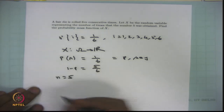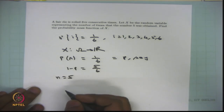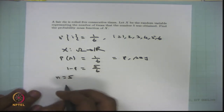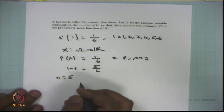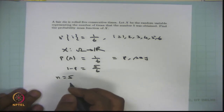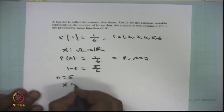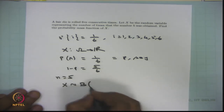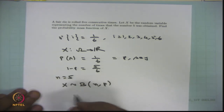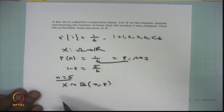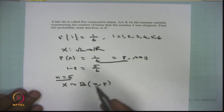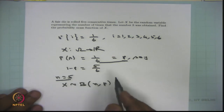Here n equals 5 independent Bernoulli trials with success probability p = 1/6 and failure probability 5/6. The random variable X represents the number of times the number 5 was obtained, which is the total number of successes in n independent Bernoulli trials. Therefore, we conclude that X follows a binomial distribution with parameters n = 5 and p = 1/6.